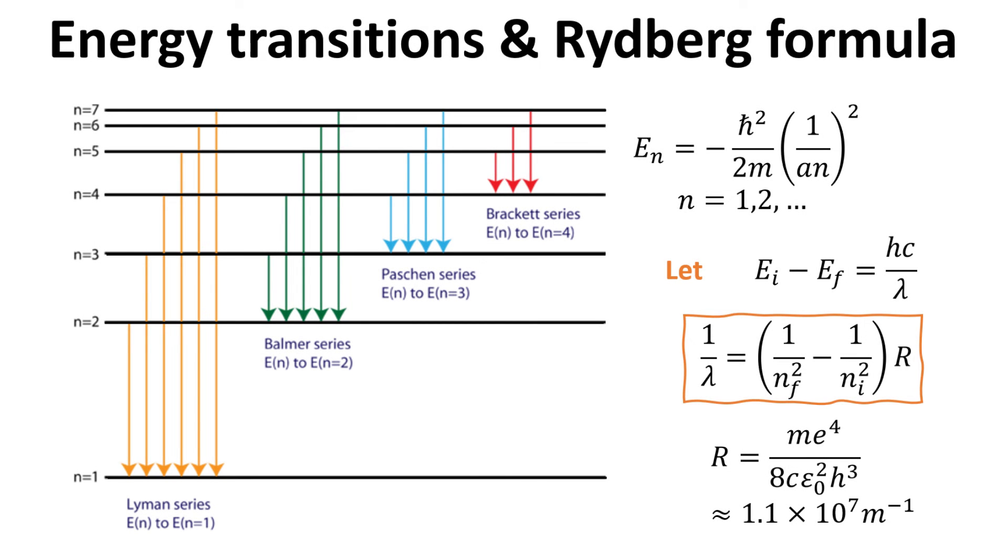Photons with wavelength λ will be emitted when electrons descend from a higher energy level Ei to a lower energy level Ef. λ can be derived easily from the Bohr formula as shown in the orange box. The constant factor R is called the Rydberg constant, and the formula is called the Rydberg formula.